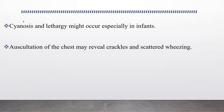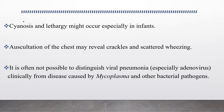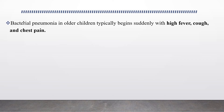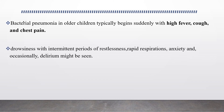Auscultation of the chest might reveal crackles and scattered wheezing. It is often not possible to distinguish viral pneumonia — especially adenovirus — clinically from disease caused by atypical pathogens such as Mycoplasma or other bacterial pathogens. Bacterial pneumonia in older children typically begins suddenly with high fever, cough, chest pain, and drowsiness with intermittent periods of restlessness, rapid respirations, anxiety, and occasionally delirium.